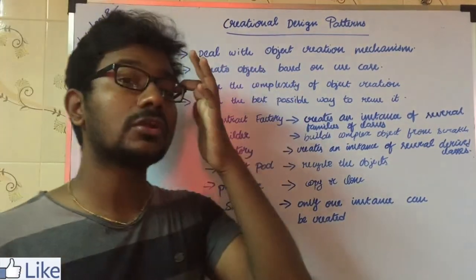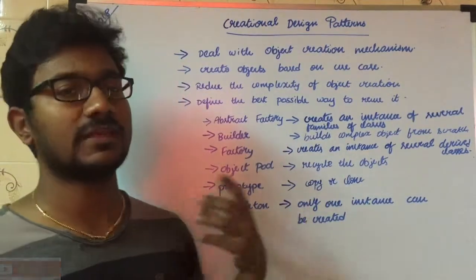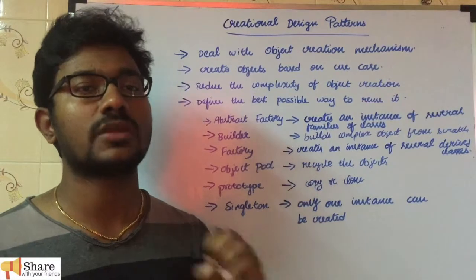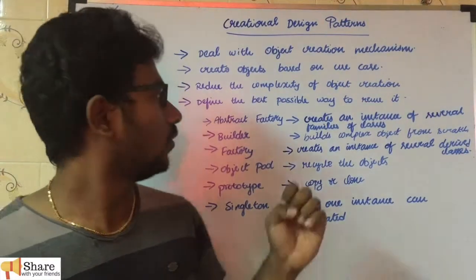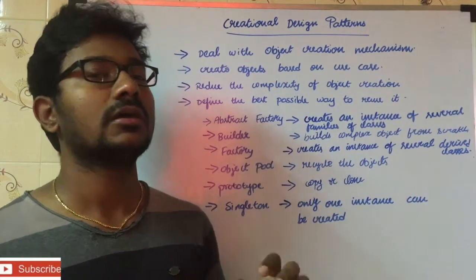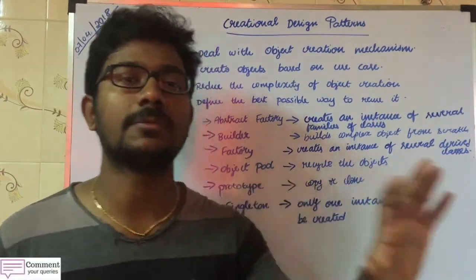These patterns create objects based on use cases. There are six design patterns. For example, Abstract Factory. We should use Abstract Factory design pattern only if it falls under this pattern. Suppose there are n number of families, for example animal family.